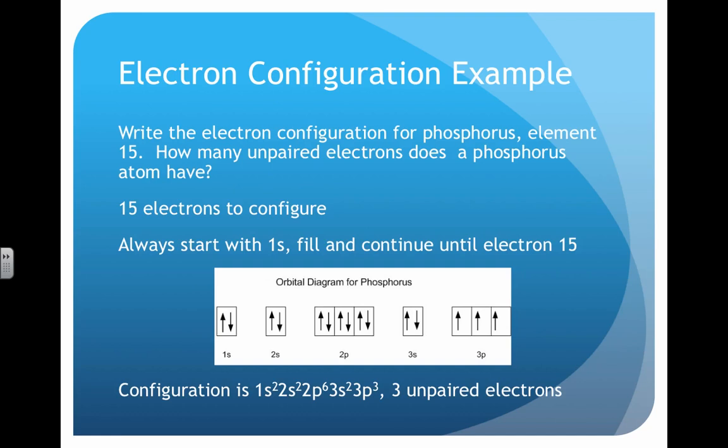Here's an electron configuration example. Let's say we have phosphorus, element 15: How many unpaired electrons does the atom have? We have to configure those first 15 electrons. We always start with 1s.